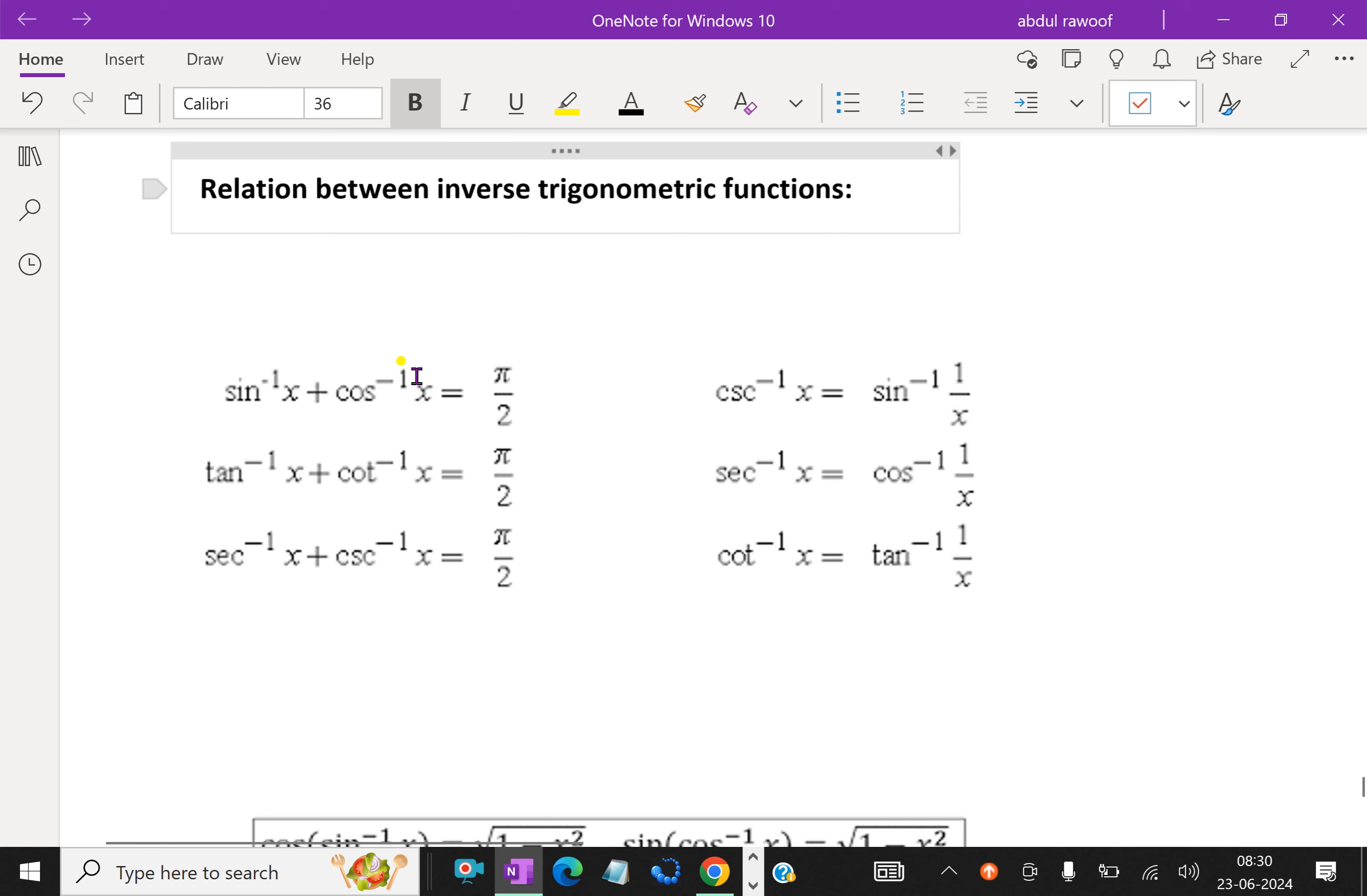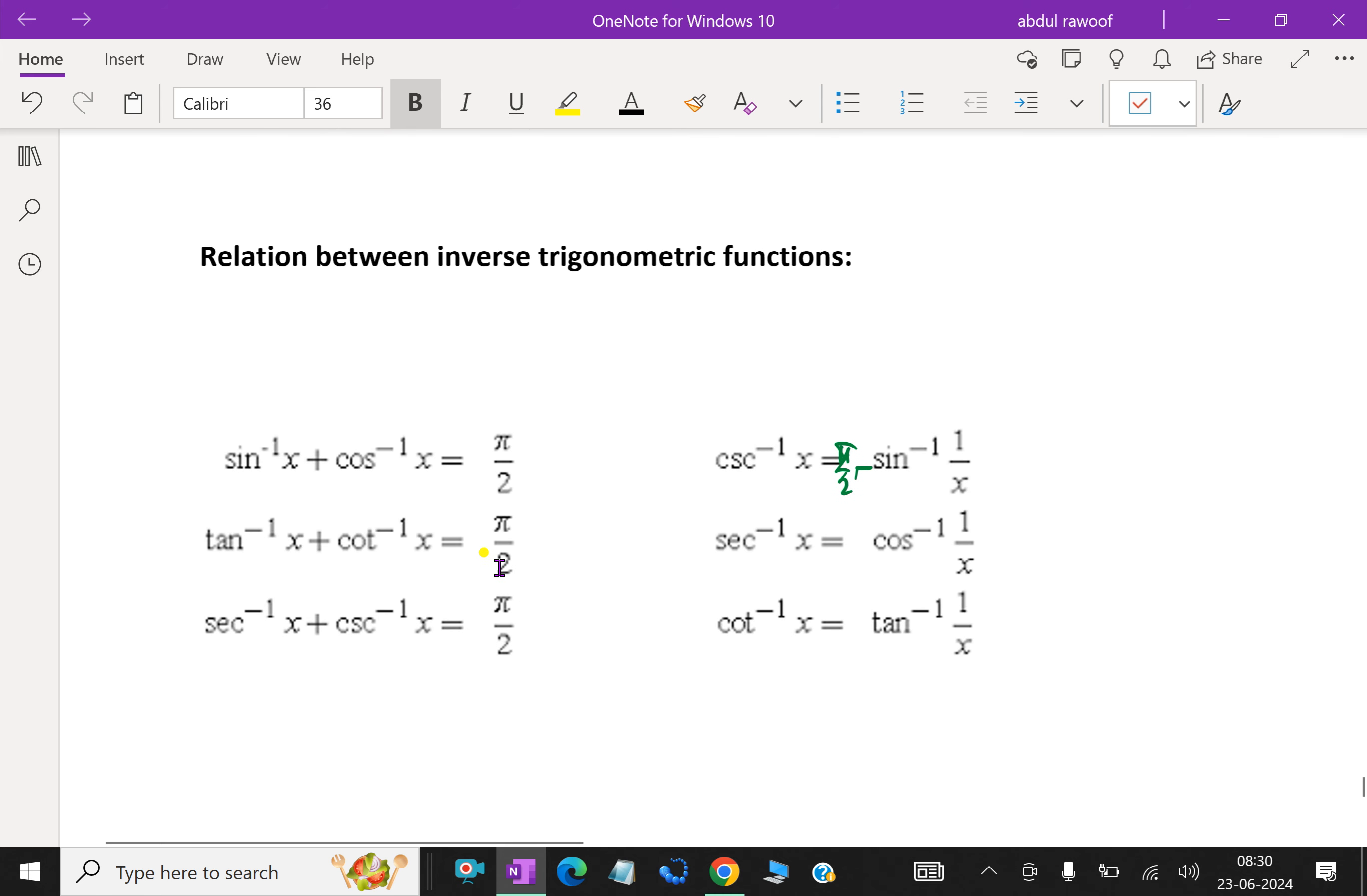So next, relationship between inverse trigonometric functions. Here, sin inverse x plus cos inverse x is always pi by 2. Then cos inverse x is pi by 2 minus sin inverse x. Tan inverse x plus cot inverse x is pi by 2. And secant inverse plus cosecant inverse x is pi by 2.